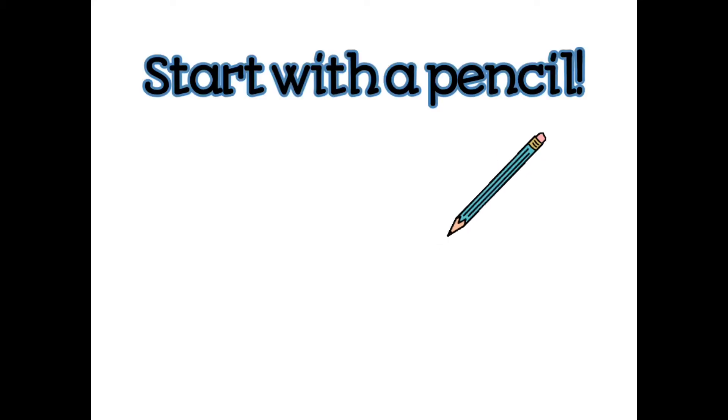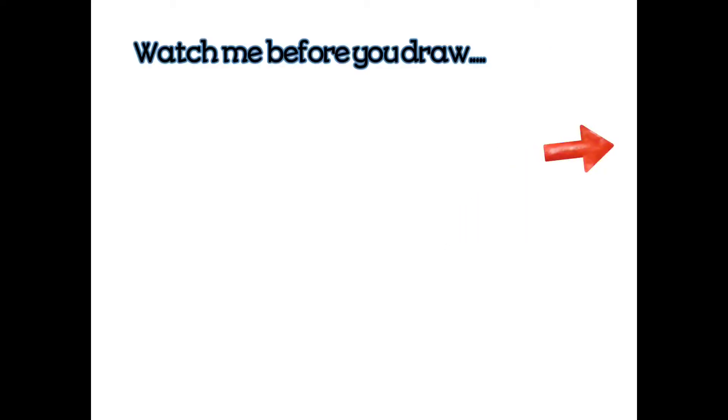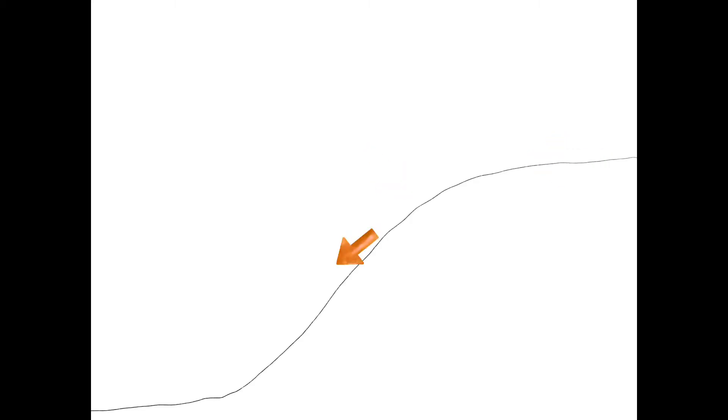All right guys, we are going to start out by drawing a line — just one line. You are going to start on the right side, about right here. Notice how it's not too far up — it's probably a little over halfway. You're going to start right here and draw straight across, and then about right here you're going to start going down, and then about right here you're going to level out to the left side, just like this. You might want to go ahead and pause the video so that you can draw this line before we move on.